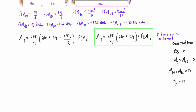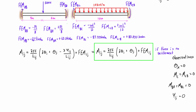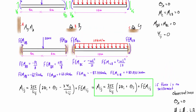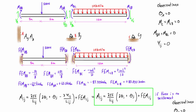We want to run this four times. We want to solve for M-AB, M-BA, M-BC, and M-CB. Each time, for each of those moments, we're just going to be substituting in the first subscript letter for all of the I's and the second subscript letter for all of the J's.